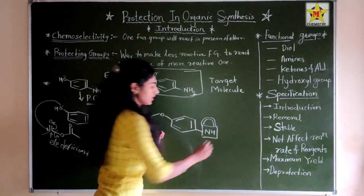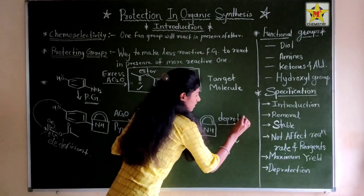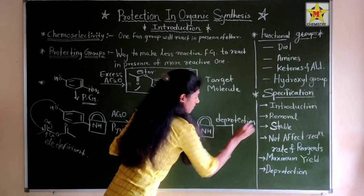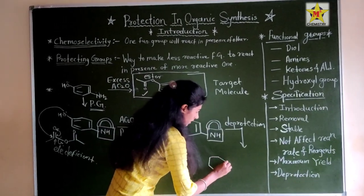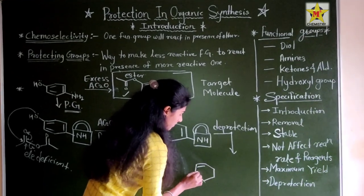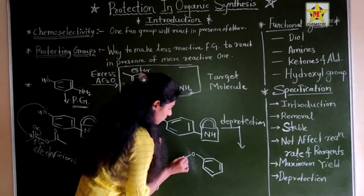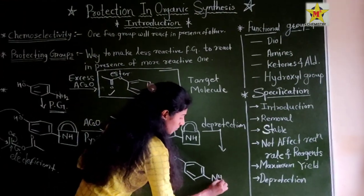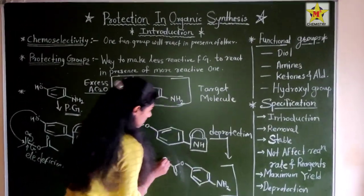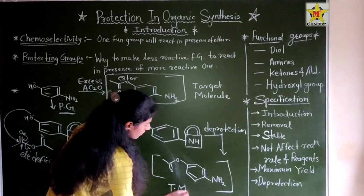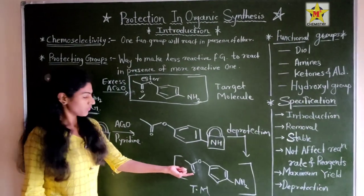But we also have to deprotect the amine. Deprotection is carried out under acid conditions. After deprotection, NH₂ is restored, and we have our target molecule — with an ester functional group and a free NH₂ group.